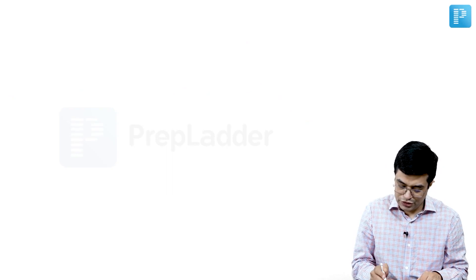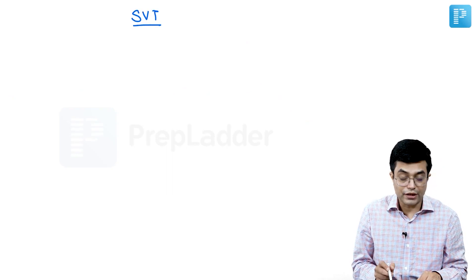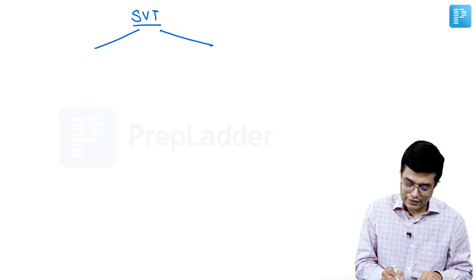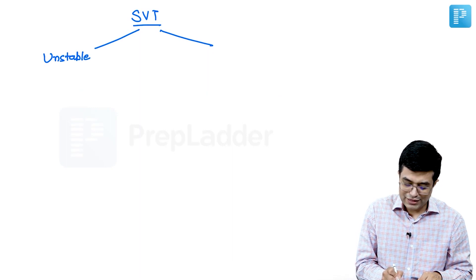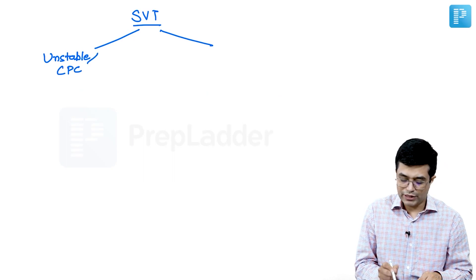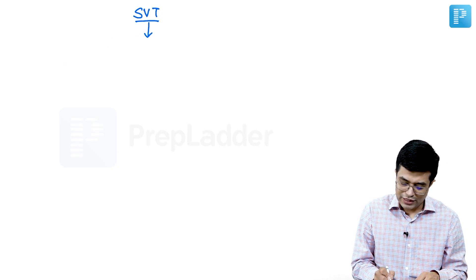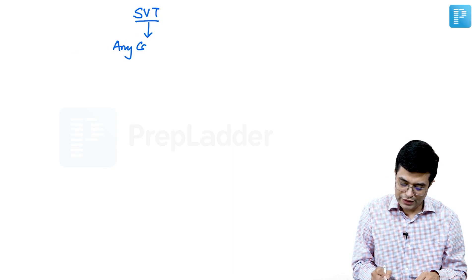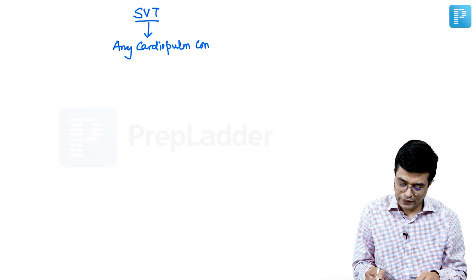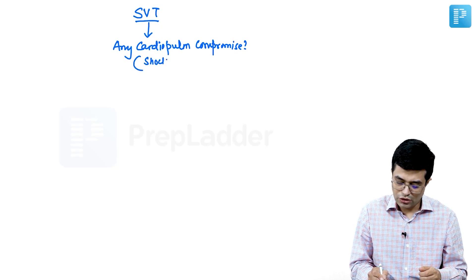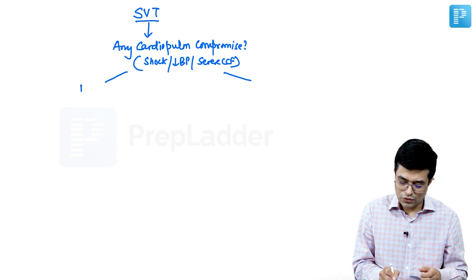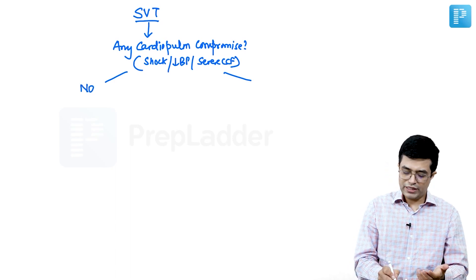Please remember that whenever you have a patient, a child coming to you with supraventricular tachycardia, in case the patient is unstable. When we say unstable, we are talking about unstable CPC. CPC stands for cardiopulmonary compromise. So some key points to remember whenever you have a child with supraventricular tachycardia coming to you, we look for presence of any cardiopulmonary compromises there or not. For example, there is any shock or low BP or any severe CCF in the patient. If the answer to this is no, there is no severe cardiopulmonary compromise. In these patients, you will go in for vagal maneuvers.